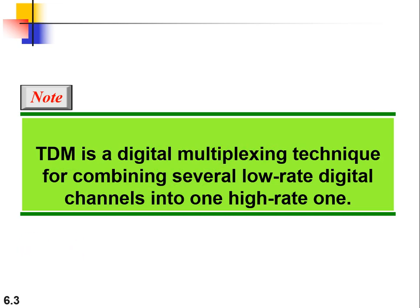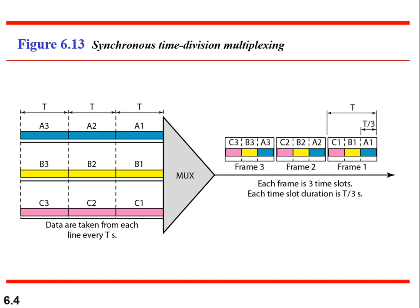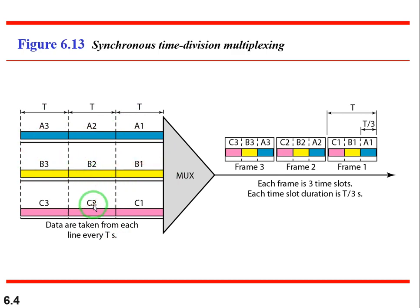Now coming to synchronous time division multiplexing. Synchronous TDM means that the clock between sender and receiver needs to be synchronized when data is sent. They need to have an understanding that this data is coming now. We have three channels — one, two, three — each with their own time duration. The MUX makes a frame of a1, b1, c1, then a2, b2, c2, a3, b3, c3. This is called synchronization.